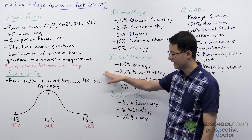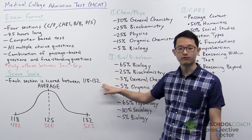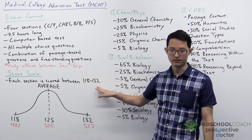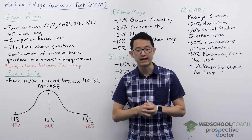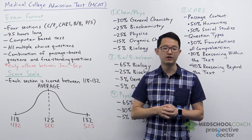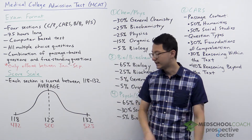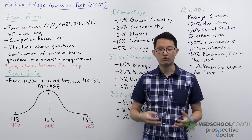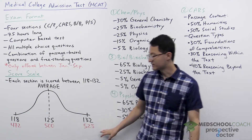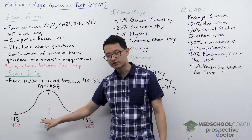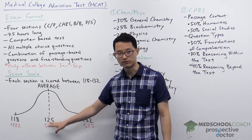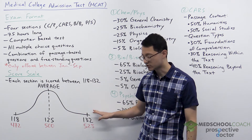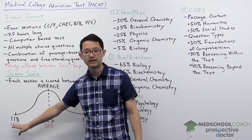Let's talk about how the MCAT is scored. Each of the four sections is scored between 118 and 132. So 118 is the lowest score you can get and 132 is the highest. The score distribution follows a normal distribution, meaning most students are going to be close to the middle, around 125, and very few students are going to get a very high or very low score.